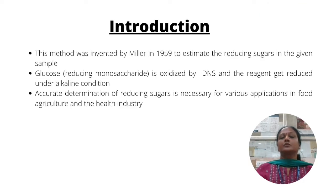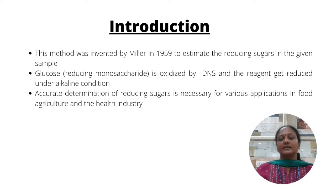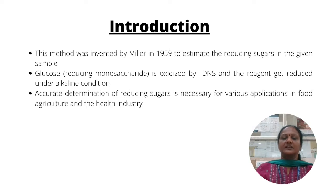Estimation of glucose by DNS method was invented by Miller in 1949 to estimate the reducing sugars in a given sample. Glucose, a reducing monosaccharide, is oxidized by DNS and the reagent gets reduced under alkaline conditions. It is an accurate method to determine reducing sugars and is widely used in various fields like agriculture, food, and health.